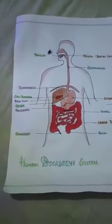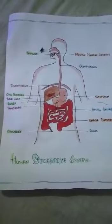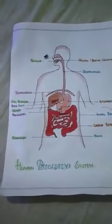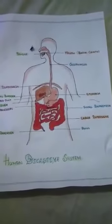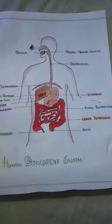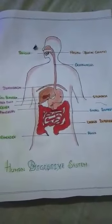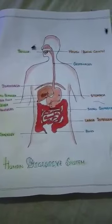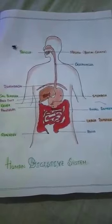Mucus protects the inner lining of the stomach from the action of hydrochloric acid. The partially digested food then goes from the stomach to the small intestine in small amounts. The small intestine is about 6.5 meters long and is the largest part of the alimentary canal. It is the site of complete digestion of food — the final digestion of carbohydrates, fats and proteins is done here.